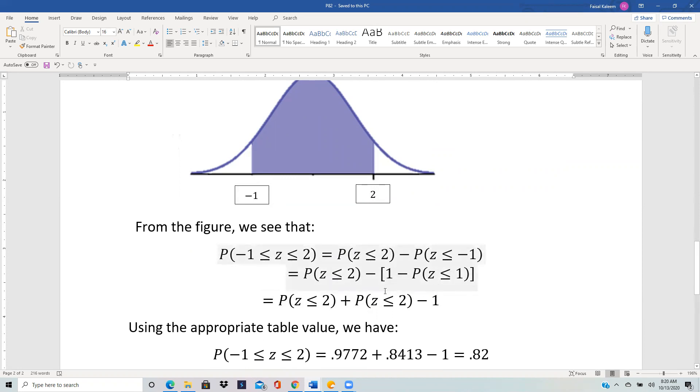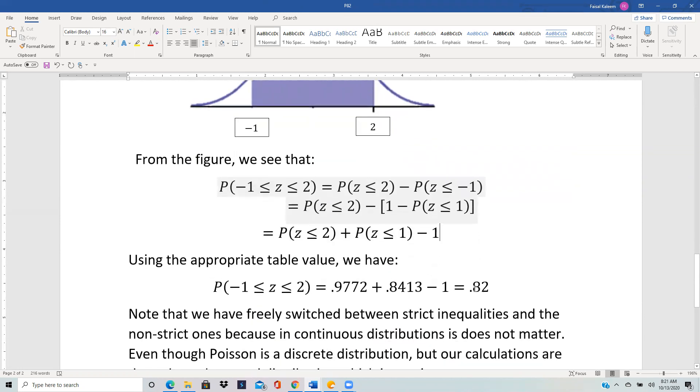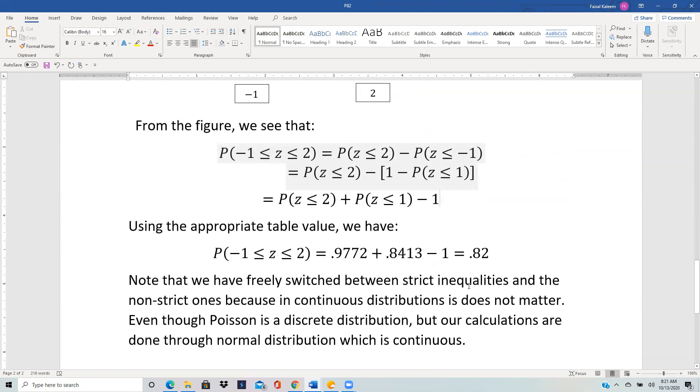So it ends up being less than equal to 2 plus less than equal to 1 minus 1. And from the table, from the normal table, we see that for the 2, let's pull up the normal tables.